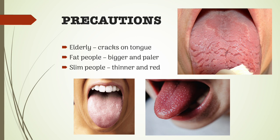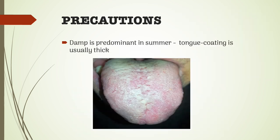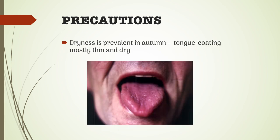Age and constitution are also important factors. Cracks on the tongue are often seen in old people. The tongue of fat people is usually bigger and paler, while it is often thinner and red in slim people. Observation of the thickness and moisture of the tongue coating and whether it is easily removed by scraping is helpful for diagnosis. Damp is predominant in summer and the tongue coating is usually thick, while dryness is prevalent in autumn and the tongue coating is mostly thin and dry.